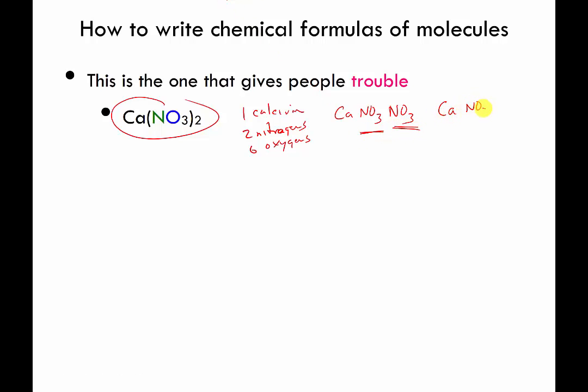But if you write it out this way, the way that nobody actually writes it out because it's tedious, you can see that there's 2 nitrogens, and there's 6 oxygens. So, another way of doing this is you should realize that there's a 1 implied to be to the right of the symbol for nitrogen. And then you can do 2 times 1 is 2, so 2 nitrogens. And you can do 2 times 3 is 6, or 6 oxygens. So, that's another way of counting these sort of more complicated formulas.